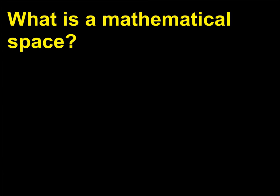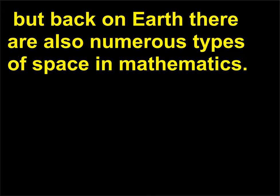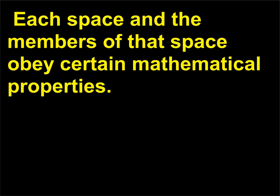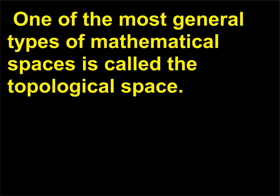What is a mathematical space? Outer space may be the final frontier to some people, but back on earth there are also numerous types of space in mathematics. For the most part, mathematical space consists of points, sets, or vectors. Each space and the members of that space obey certain mathematical properties. Most spaces are named after their principal investigator, including Euclidean and Minkowski space. One of the most general types of mathematical spaces is called the topological space.